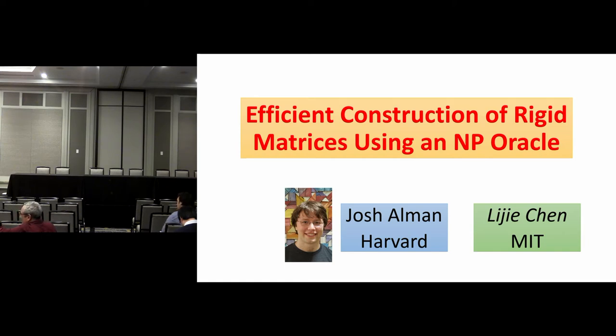The first two papers shared the best student paper award called the MACD award, so the first winner of the MACD again, not first, one of the winners of the MACD award is efficient constructions of rigid matrices using an NP oracle by Josh Allman and Li Ji Chen. Li Ji will give the talk.